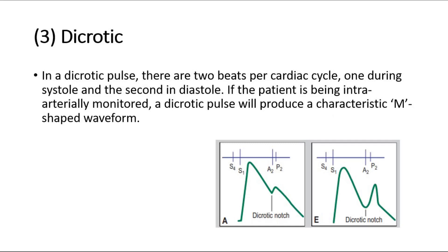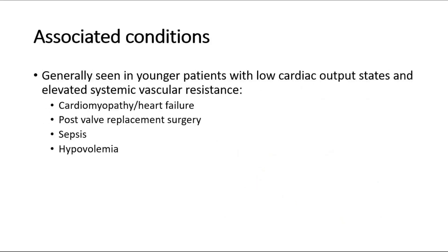The third type is the dicrotic pulse. In a dicrotic pulse, there are two beats per cardiac cycle, one during systole and the second in diastole. If the patient is being intra-arterially monitored, a dicrotic pulse will produce a characteristic M-shaped waveform. Shown in picture E, a dicrotic pulse is generally seen in younger patients with low cardiac output states and elevated systemic vascular resistance, such as cardiomyopathy or heart failure, post-valve replacement surgery, sepsis, and hypovolemia.